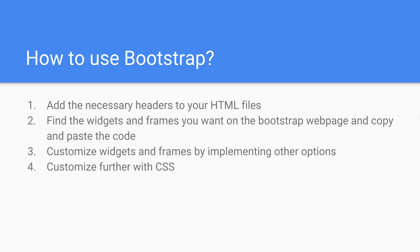Step number three is further customizing widgets and frames by implementing other options. Going back to that button example — there isn't just one type of button in Bootstrap, there are many other ways we can customize it. For example, perhaps we'll want a large versus a small button, a certain font, or a completely circular button versus a square button. After this comes step number four, which is to customize our elements further using custom CSS. Of course we don't just have to use everything that Bootstrap provides — we can customize things even further.